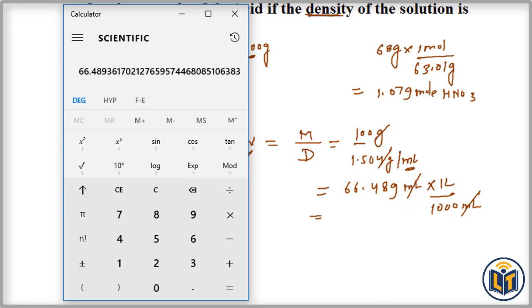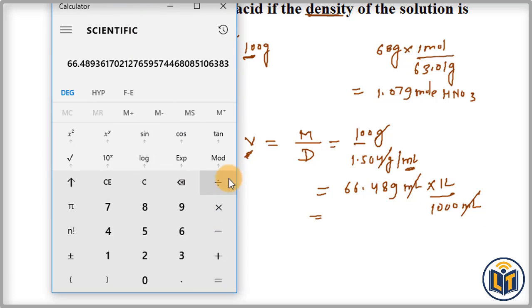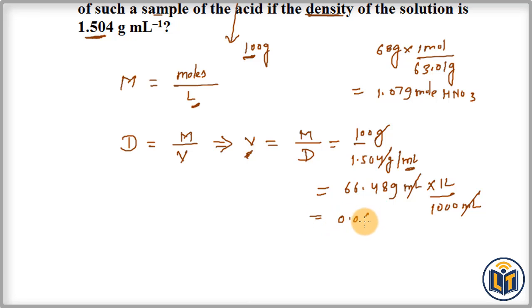We can divide this value by 1000. The value which we get is 0.0665 liters. We can round out this figure now to 0.0665 liters.